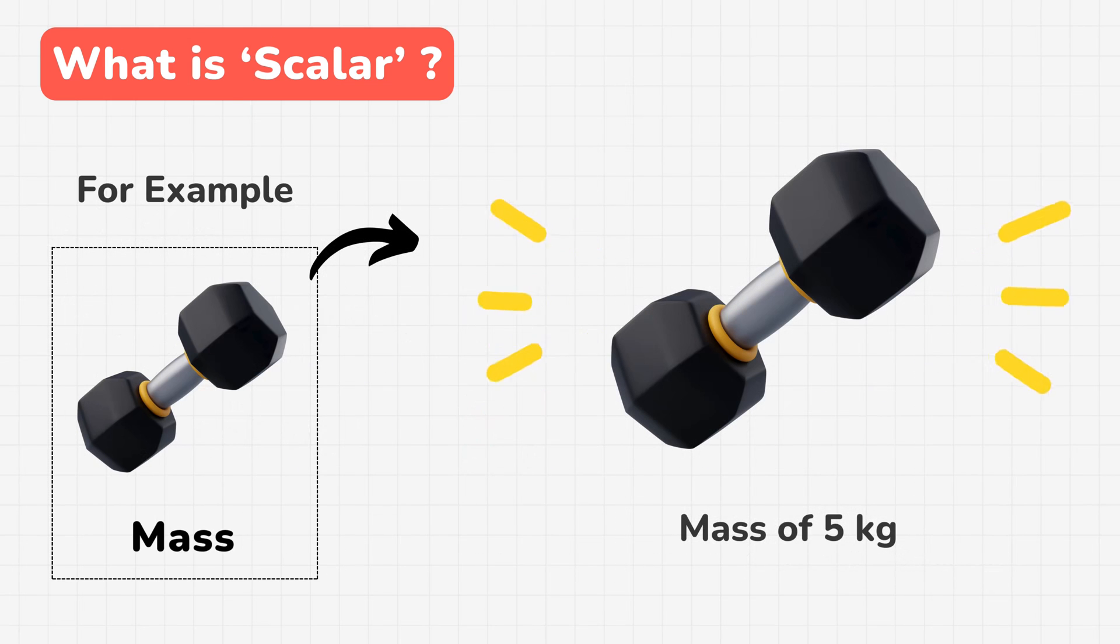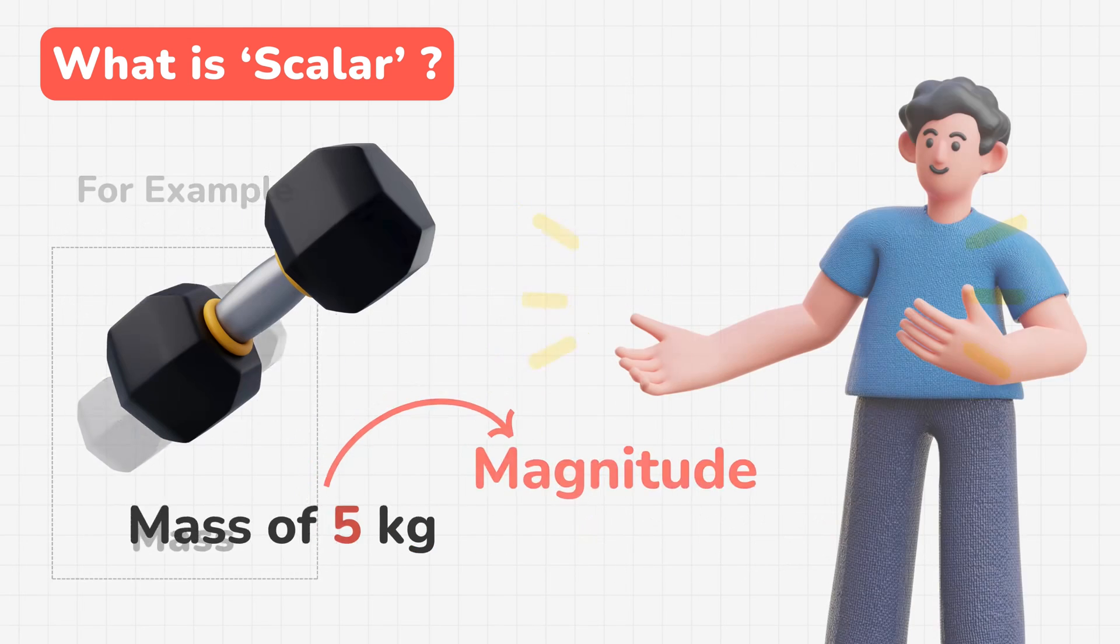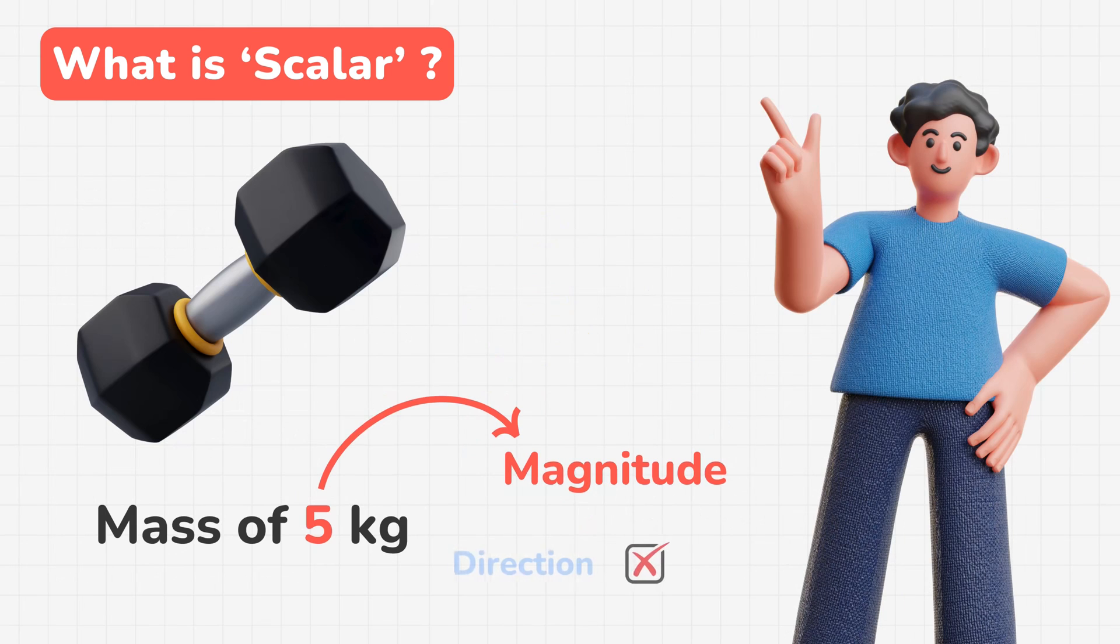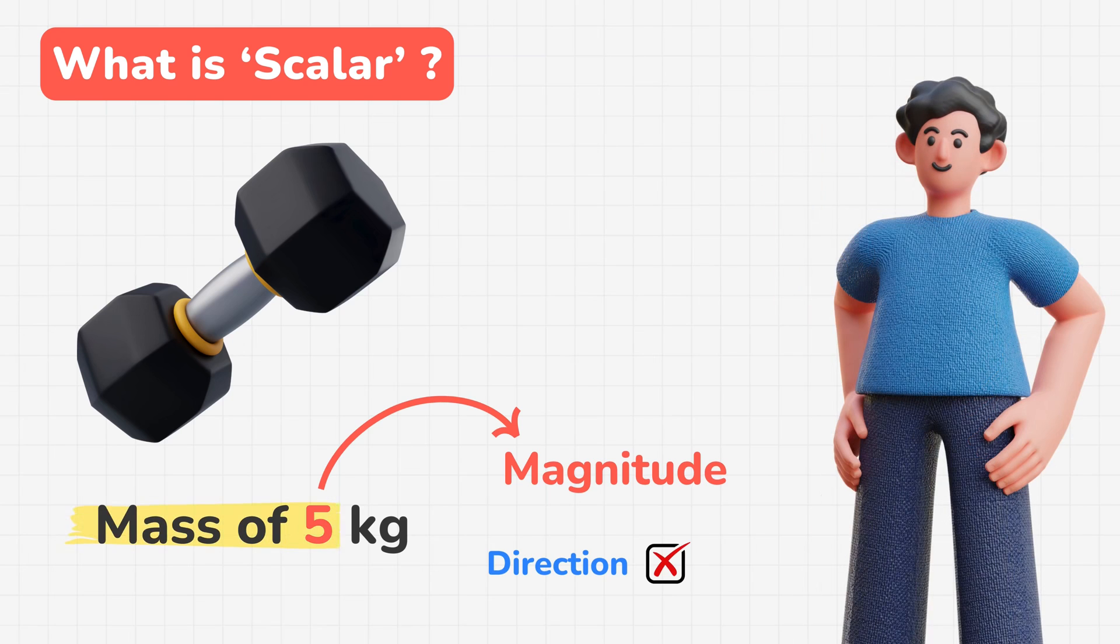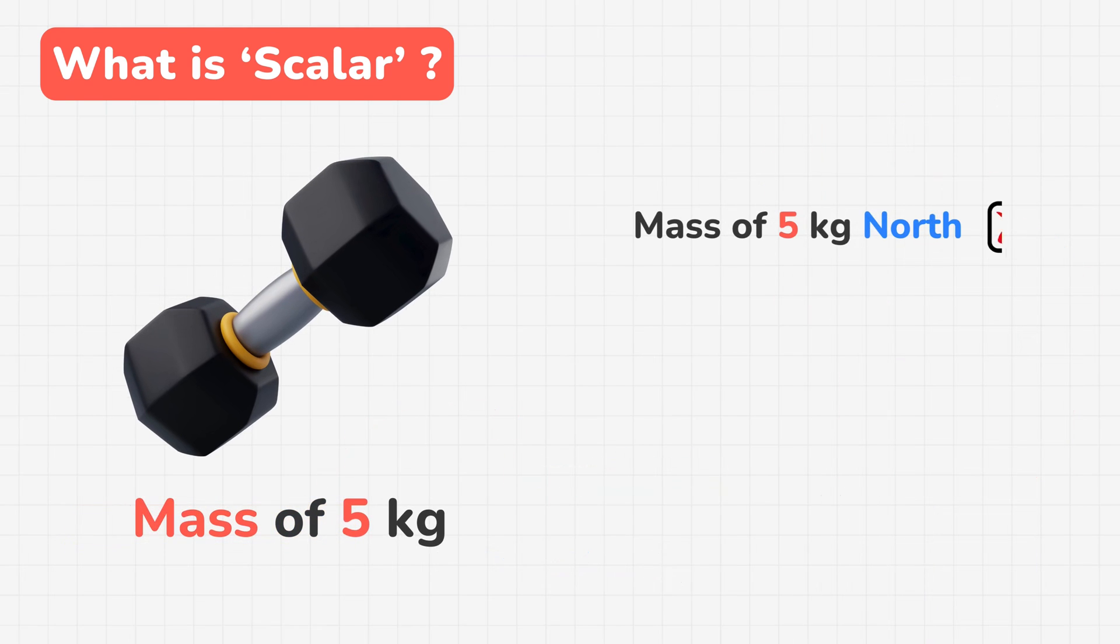Consider a dumbbell of mass 5 kg. Here, 5 is the magnitude and it has no direction. It's simply a mass. We don't say mass of 5 kg north or mass of 5 kg south. It's just 5 kg.